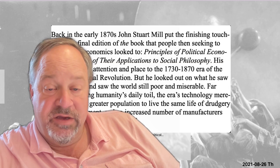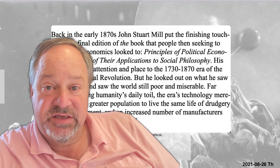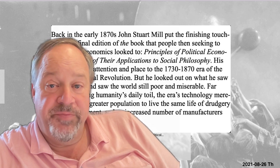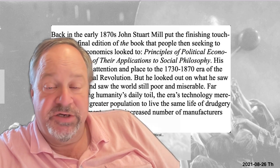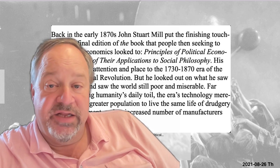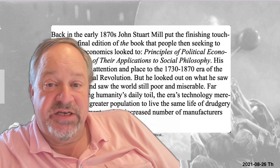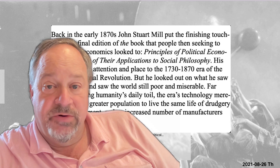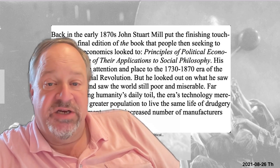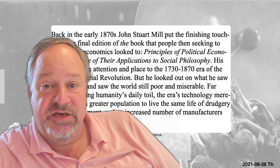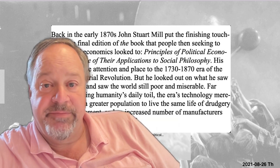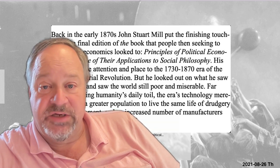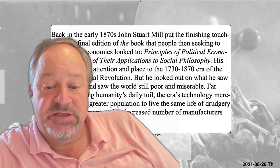Do not think that the fact that the long 20th century saw humanity escape from Malthusian poverty into relative abundance was foreordained. Back in 1870, British polymath John Stuart Mill did not see business as usual or a continuation of current trends as producing a world of abundance. Instead, he saw technology advancing, yes, but not fast enough to outrun growing population — and so the typical human continuing to live the same life of drudgery and imprisonment as humans had before.